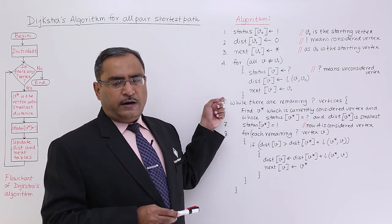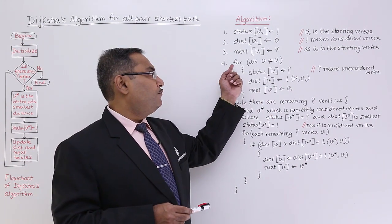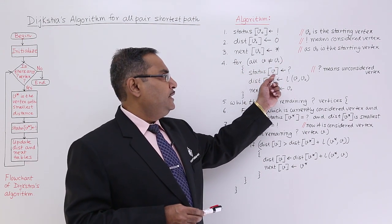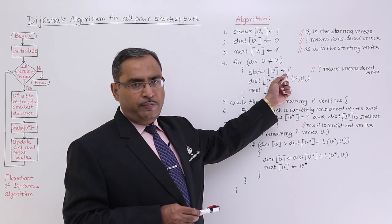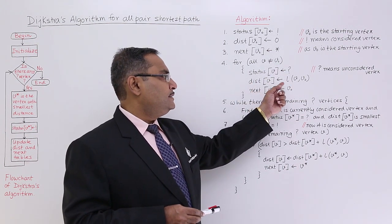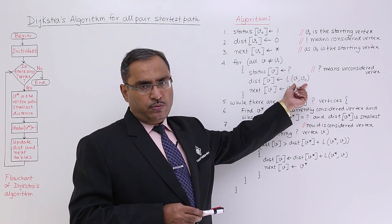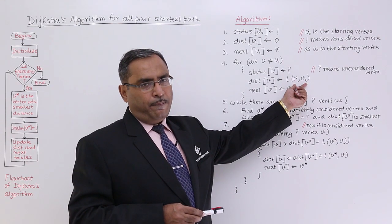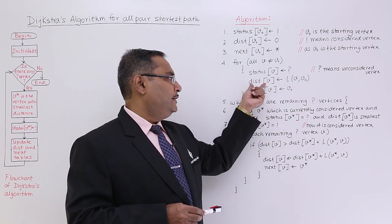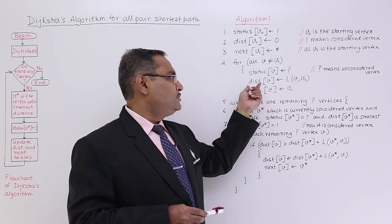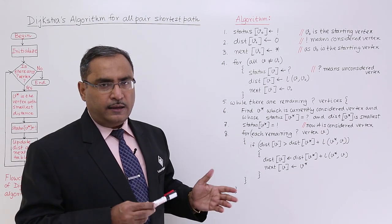For remaining vertices other than V0, so for all V is not equal to V0, status V is equal to question mark, that means they will remain unconsidered. dist V is equal to L V V0. If there is a path between V and V0, then the path weightage will be put in the distance V. If the path does not exist, then dist of V will be containing infinity.